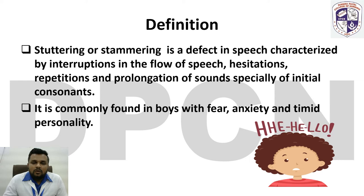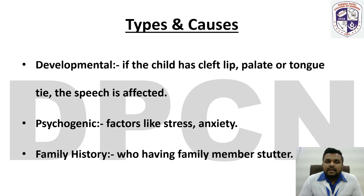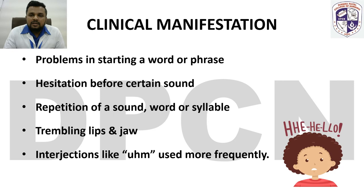There are mainly three types of causes: developmental, psychogenic, and family history. In developmental causes, if the child has problems like cleft lip, palate, or any type of disorder, speech is affected. Psychogenic causes may be stress or anxiety. In family history, if any member has the problem of stuttering, children may develop the disorder.